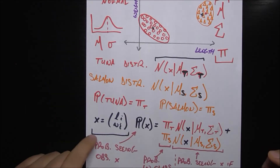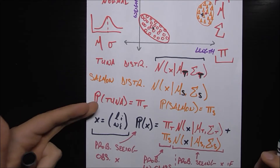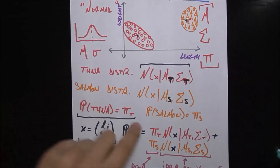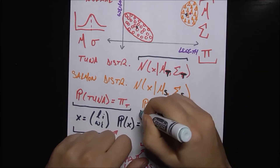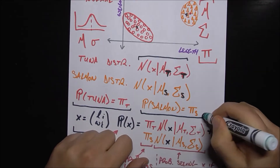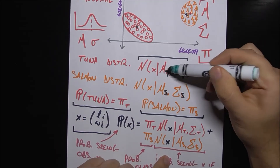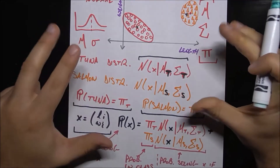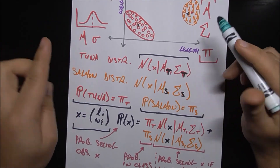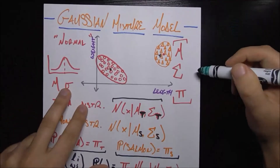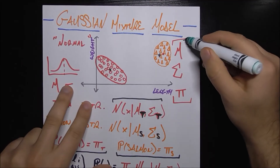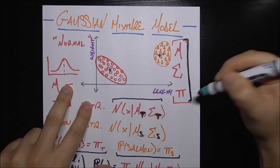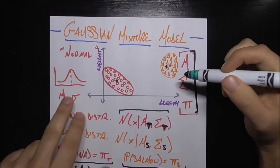There are also the pi parameters, which tell us the probability that something is a tuna — pi_t — and the probability that something is a salmon — pi_s. These parameters together, mu, sigma, and pi, completely describe our entire situation. Once we figure out these parameters, it'll be straightforward to determine whether a mystery observation is a salmon or a tuna.